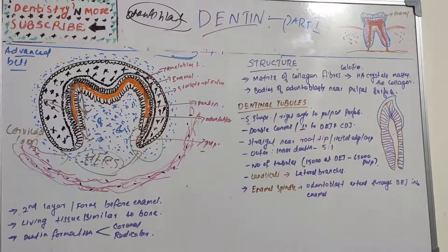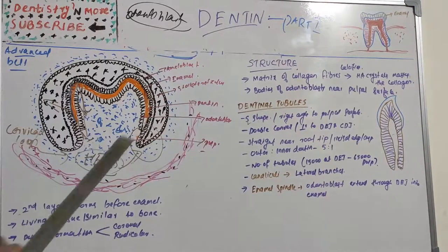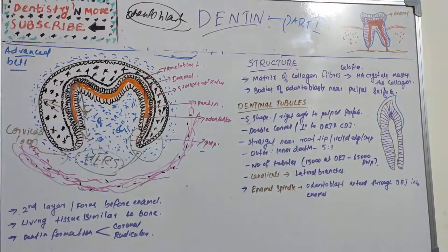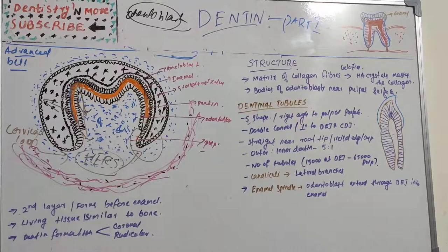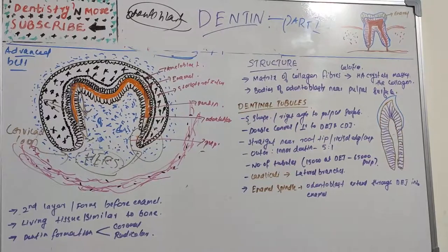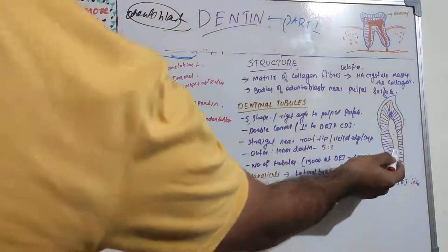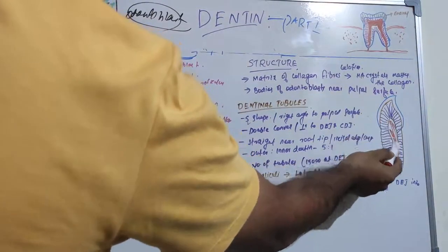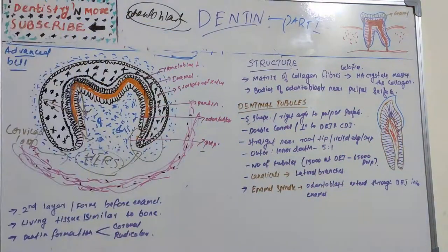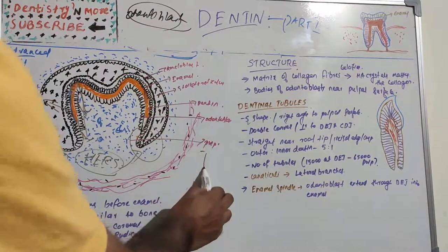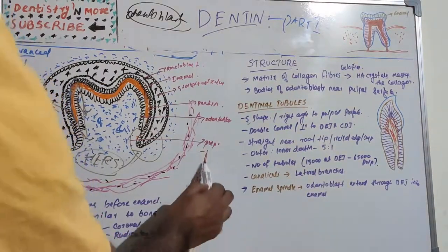The dentinal matrix of collagen fibers is arranged in a network. As the dentine calcifies, hydroxyapatite crystals mask the collagen fibers. The bodies of odontoblasts are arranged in a layer on the pulpal surface of the dentine, with the odontoblast having a projection — a tail and head part.